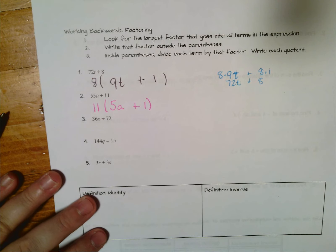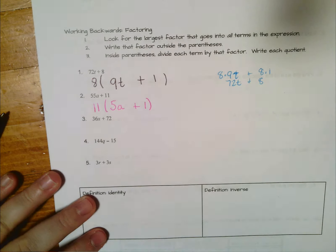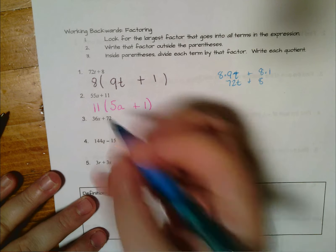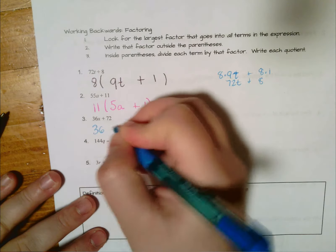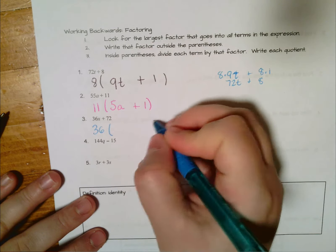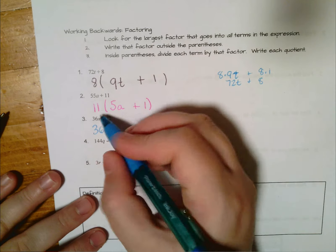If you understand what you're doing, please pause the video right now and continue working on this on your own. If you're not sure what to do, keep watching. So 36x plus 72, I have to think of the biggest number that goes into 36x and also 72. It happens to be 36, because 36 times 1 is 36 and 36 times 2 is 72.